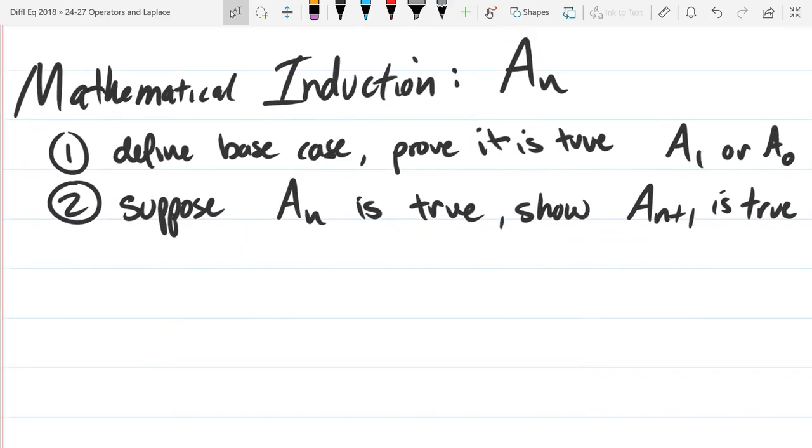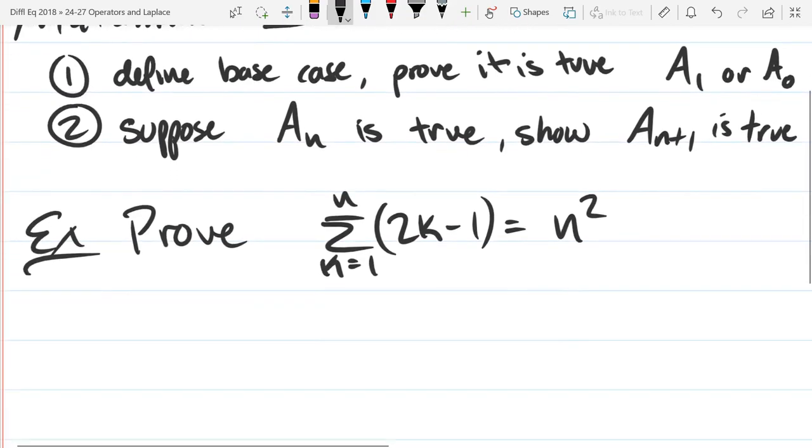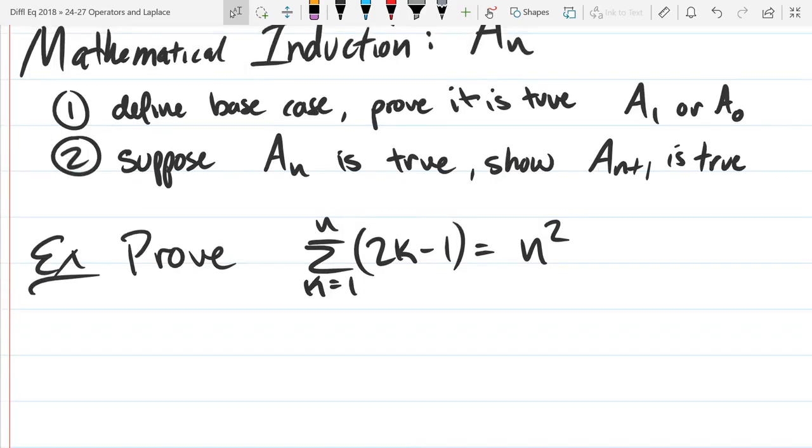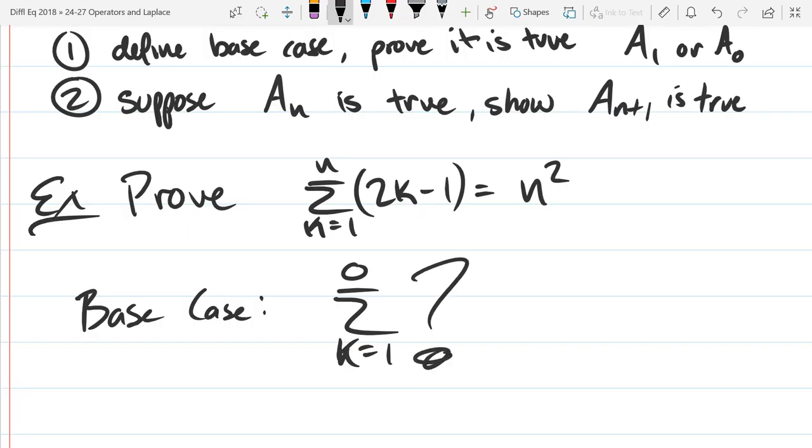We're going to prove that this summation is equal to n squared. What n value would our base case use? What's the smallest n value that makes sense? 1. Zero doesn't make sense because what would the sum from k equals 1 to 0 look like? That's not really defined. There is no a_0. So a_1 is our base case.